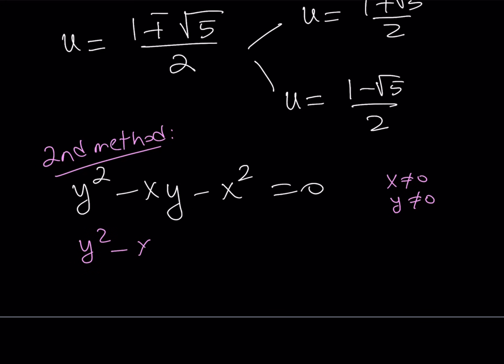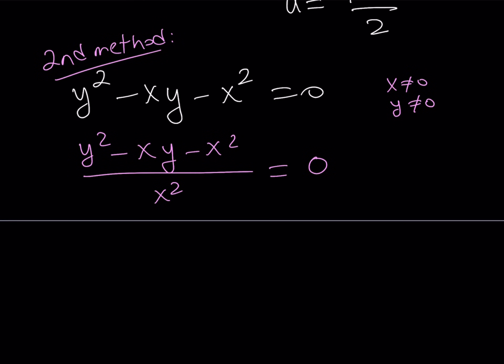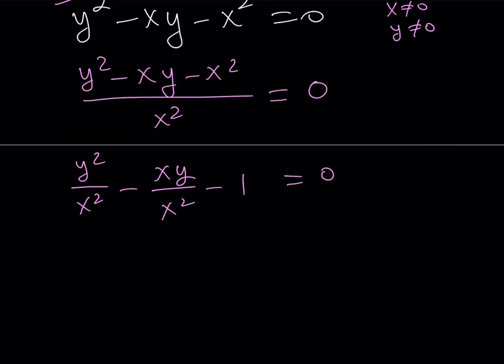Now, you might be asking at this point, like, why is he dividing by x squared? You'll see in a little bit. If I divide 0 by that, it's going to become 0. Now, here, the reason why I divided that is if you separate these terms, you're going to get something super nice. Of course, this is going to be a 1. And you're going to get the following. x cancels out with one of these. And then we get y over x quantity squared minus y over x minus 1 equals 0. And yes, that's right. You've got a quadratic equation in y over x. So, from here, you can just directly solve for y over x.